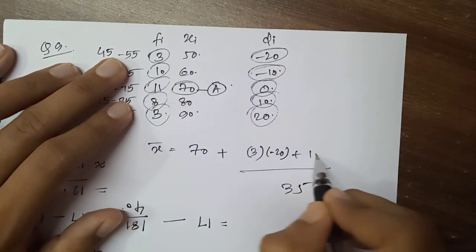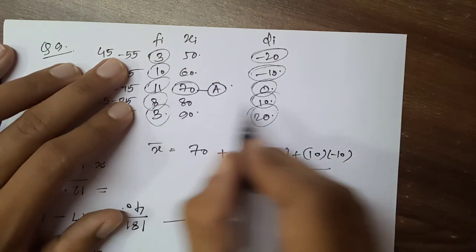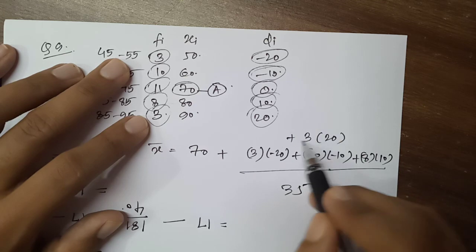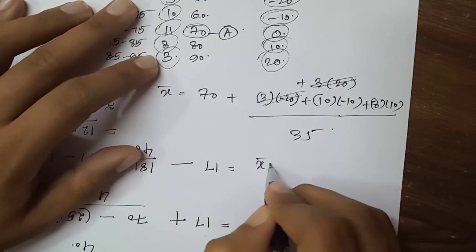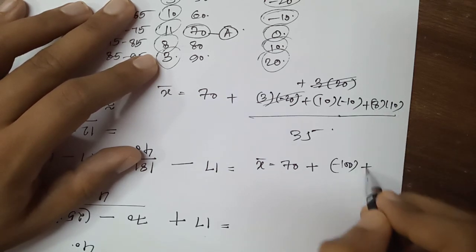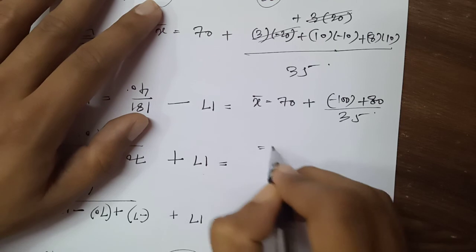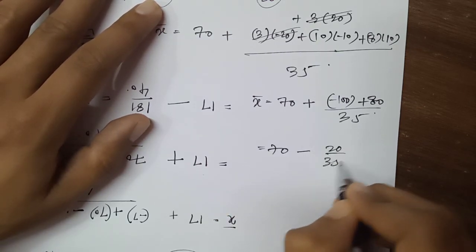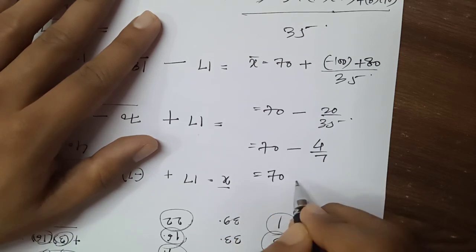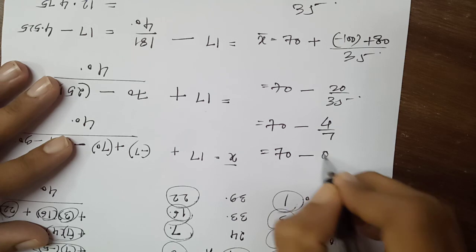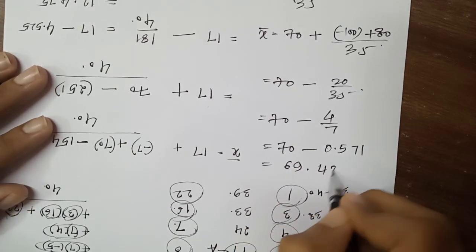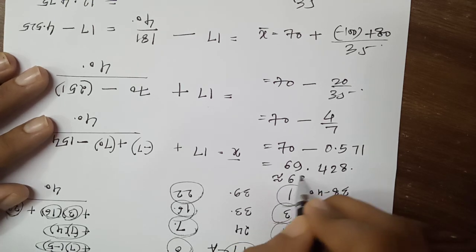Computing di·fi: 3×(−20) = −60, 10×(−10) = −100, 11×0 = 0, 8×10 = +80, 3×20 = +60. Notice 3×20 and −3×20 cancel out. Remaining: −100 + 80 = −20. So mean = 70 + (−20)/35 = 70 − 20/35. Since 20/35 = 4/7 ≈ 0.571, the mean = 70 − 0.571 = 69.428 ≈ 69.43%.